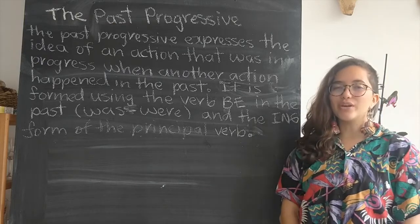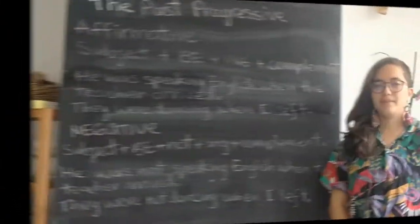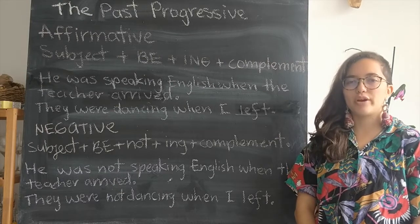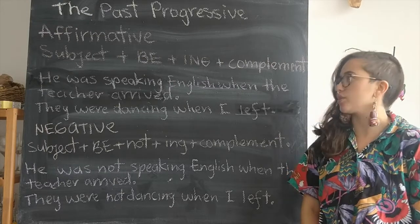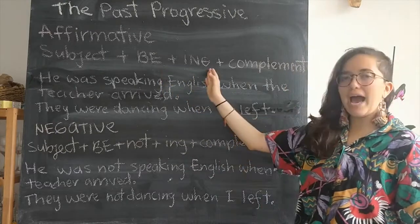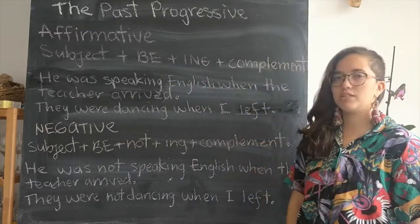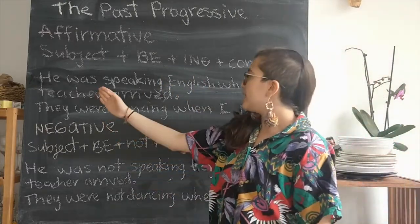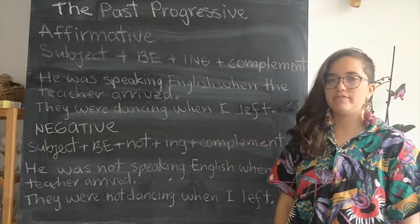Now let's look at some examples. With affirmative sentences in the past progressive, we use the following structure: subject plus 'be' plus -ing plus complement. So we would say: 'He was speaking English when the teacher arrived.'